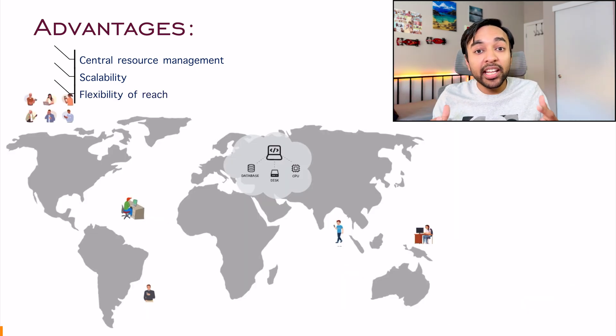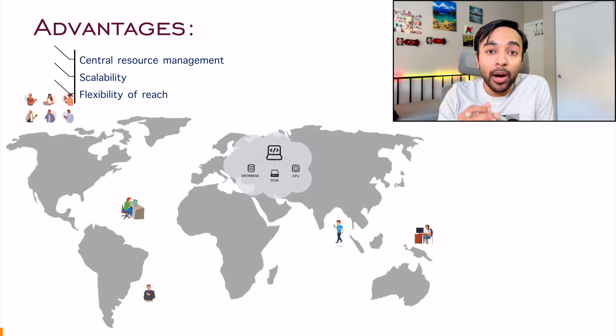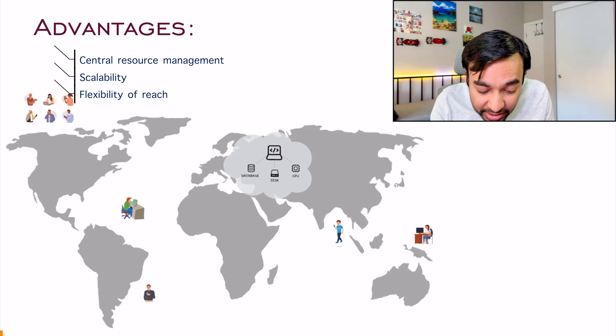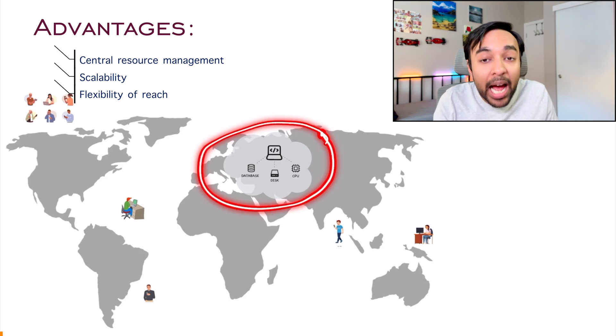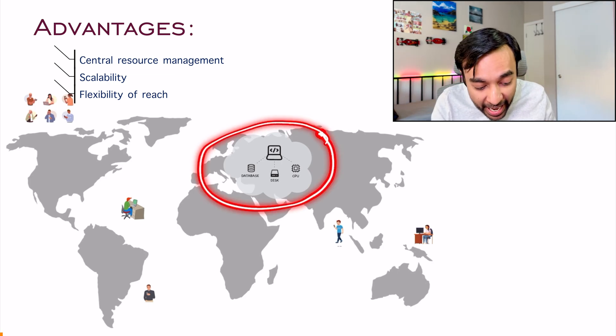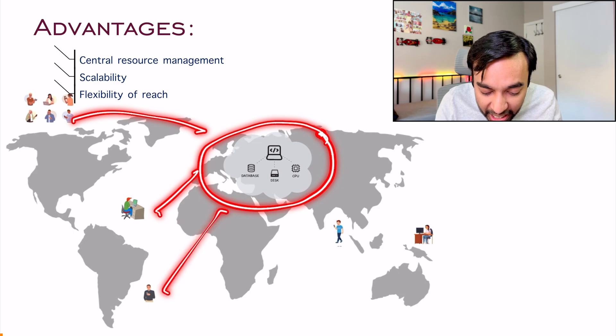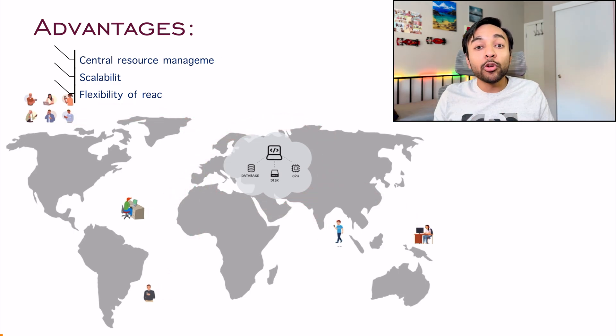Another advantage that you get inherently when you are talking about a client-server architecture is flexibility. That means you can just deploy your app at one place in the world. And since it is internet, everyone from the world is able to access you. So this is all made possible by using the client-server architecture.